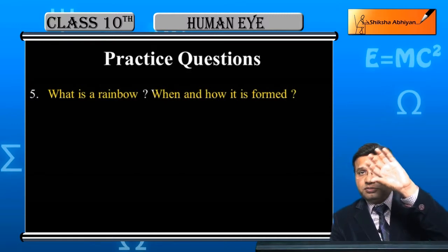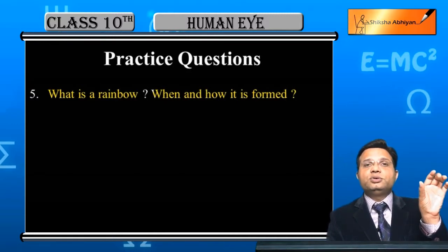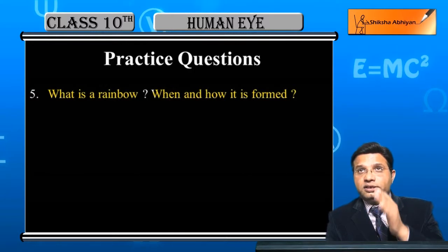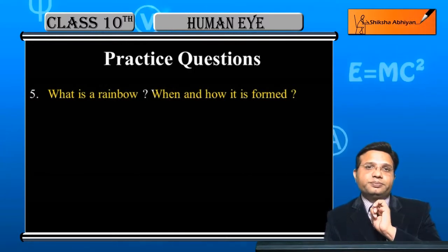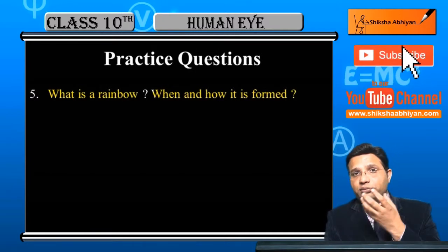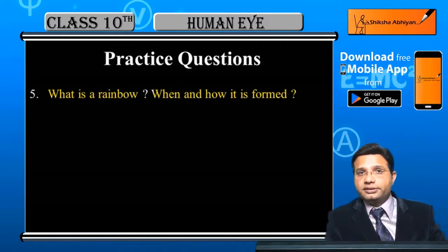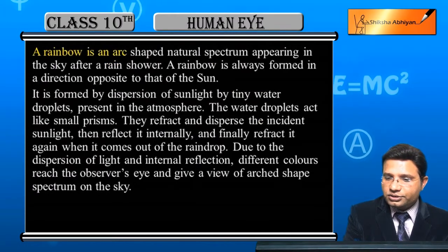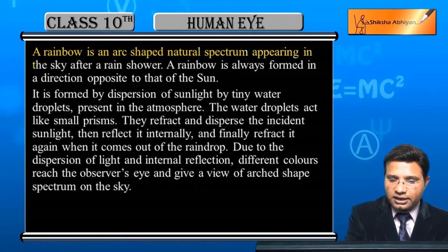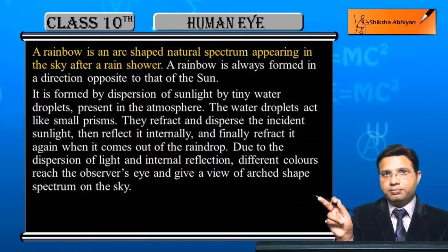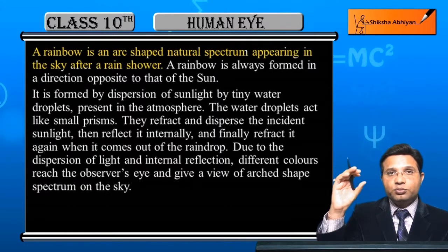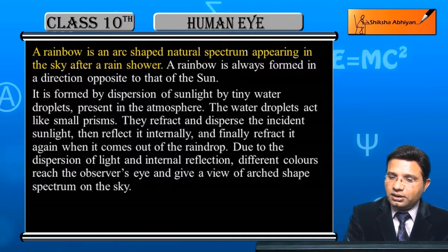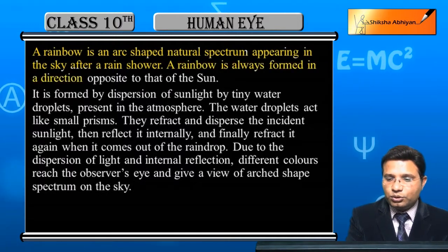A spectrum with seven colors in an arc shape — we call that the rainbow. A rainbow is an arc-shaped natural spectrum appearing in the sky after a rain shower. A rainbow is always formed in a direction opposite to that of the sun.